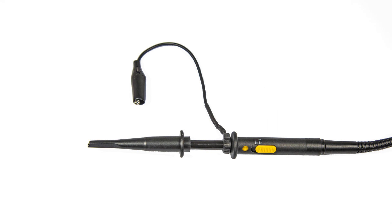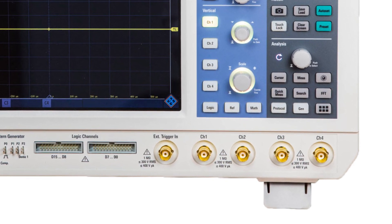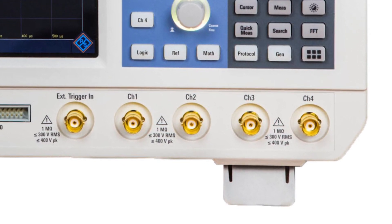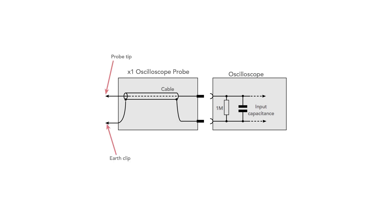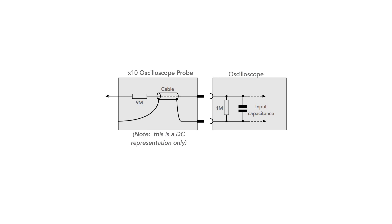There are also some times 100 probes but these are not nearly so common. Scopes normally have a 1 megaohm impedance and often a 50 ohm capability as well. Passive probes typically use a 1 megaohm impedance, although a few are designed to work on 50 ohms. Probes present an impedance to the circuit under test: for passive times 1 probes this is 1 megaohm at DC, and for times 10 probes it's normally 10 megaohms, but there is some capacitance as well, which has a major effect and causes discrepancies even at quite low frequencies.